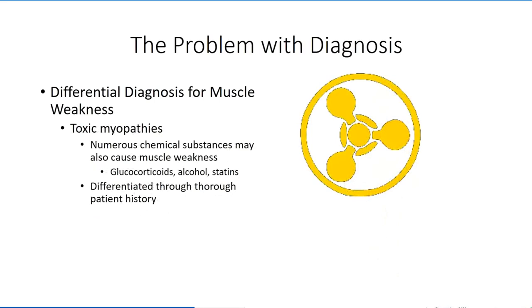In a later session, we will be discussing toxic myopathies, which are muscle diseases that result from chemical substances which are toxic to muscle tissue. This can be an intended effect, which is the case with certain animal venoms, or it may be an unwanted side effect of certain medications. While presentation may have some similarities to inflammatory myopathies, the patient history should lead to the identification of a precipitating factor for the diagnosis of a toxic myopathy.